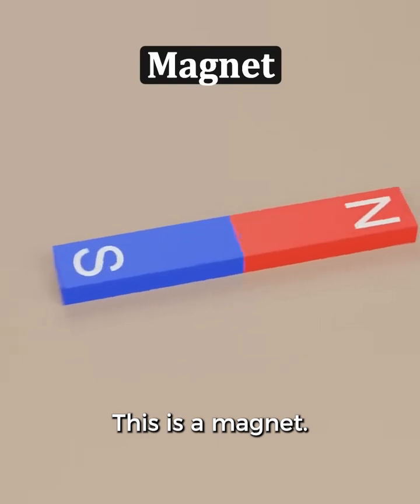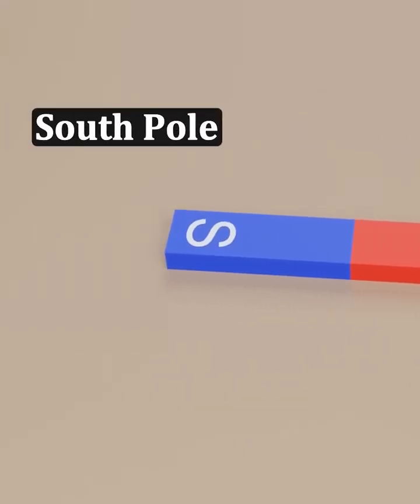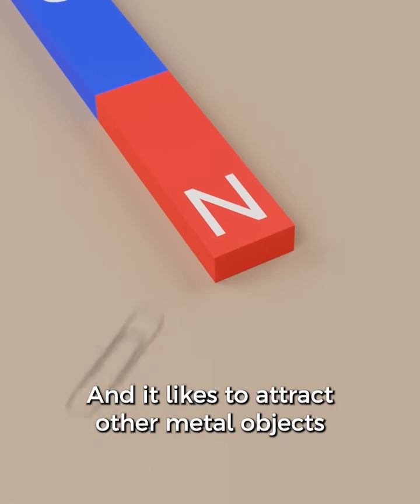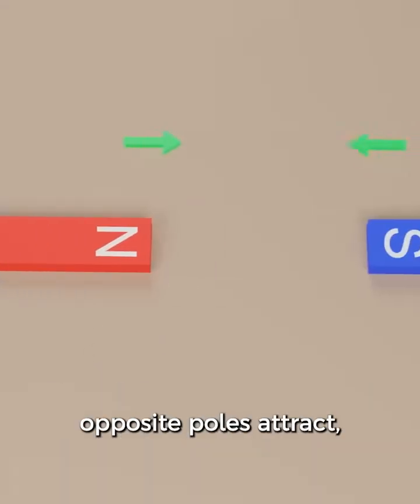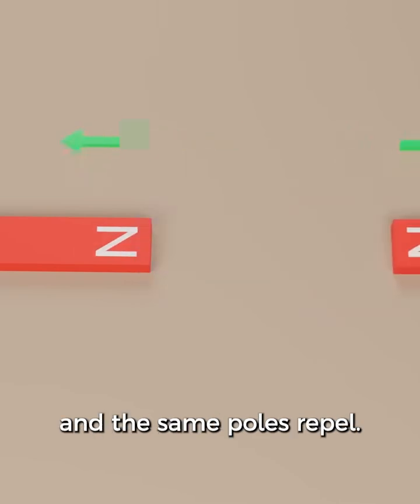This is a magnet. It has a north pole and a south pole. And it likes to attract other metal objects like these paper clips. If you bring another magnet towards it, opposite poles attract and the same poles repel.